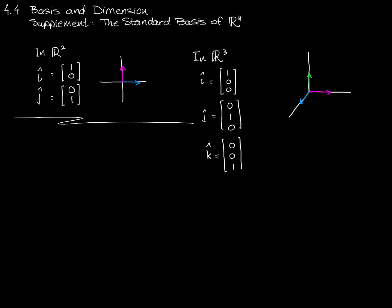We have a set of standard basis vectors in every dimension. For example, in R5, they would look like this: 1, 0, 0, 0, 0; then 0, 1, 0, 0, 0; and so on.